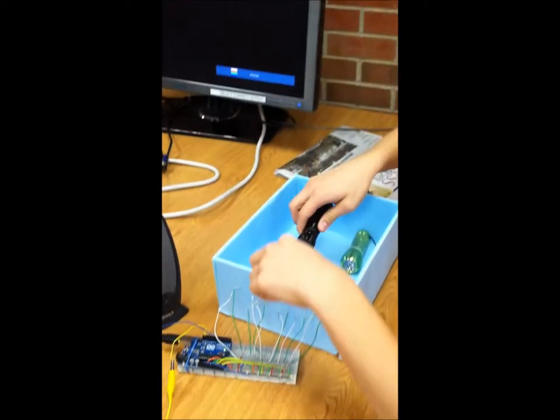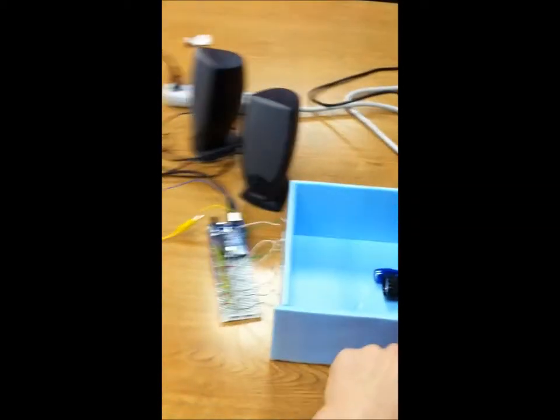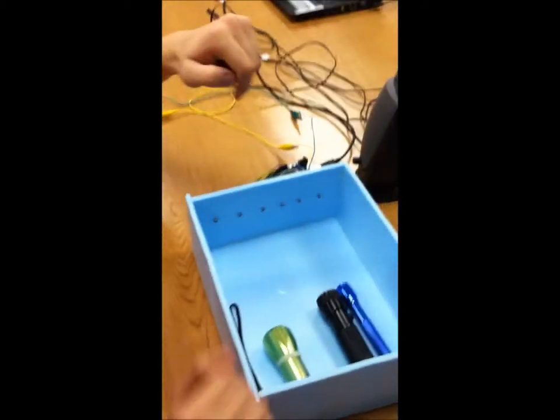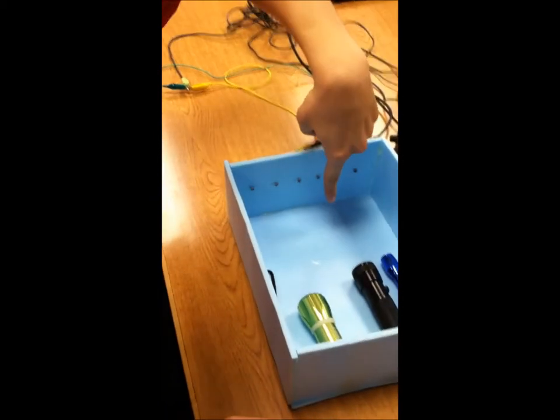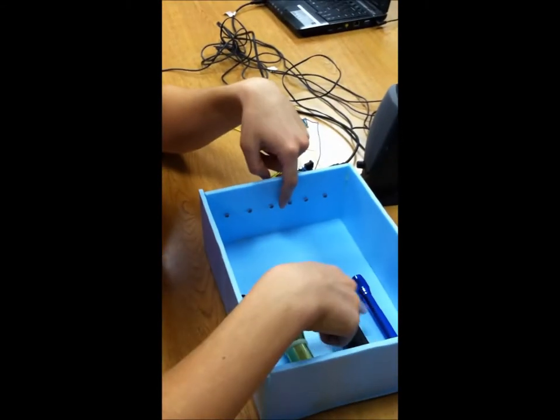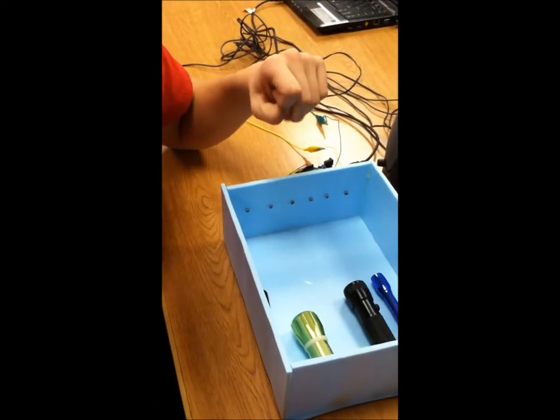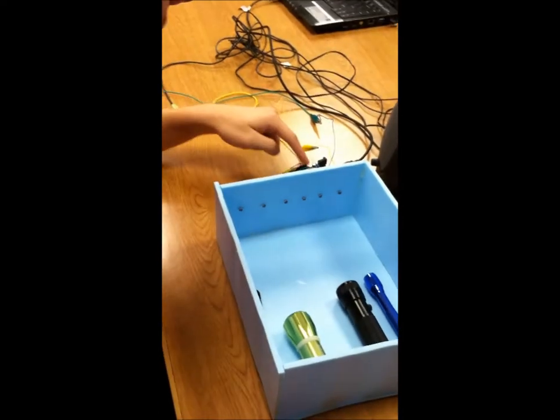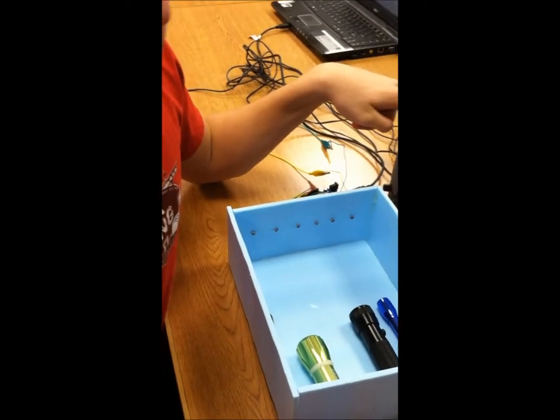Okay, so how it works is we have light shining on one of the photo sensors right here. It's shining directly on the photo sensor. And when you block the light to the photo sensor from the flashlight, it sends a signal to the Arduino to send a signal to the speakers to play a note.